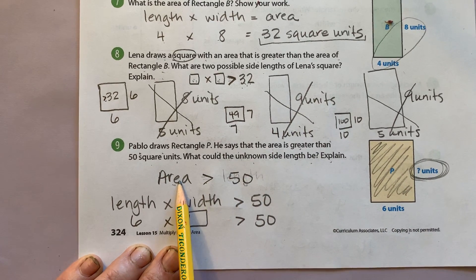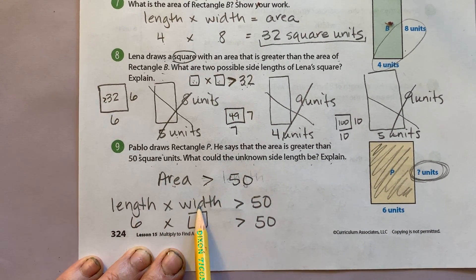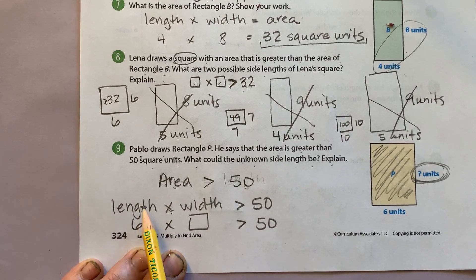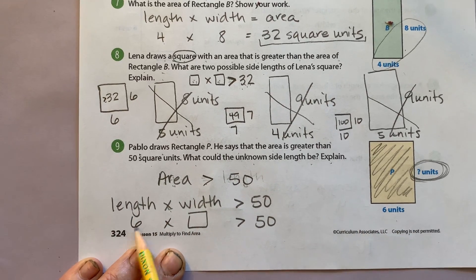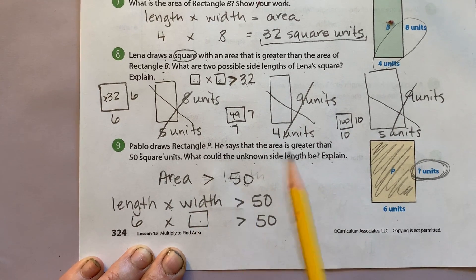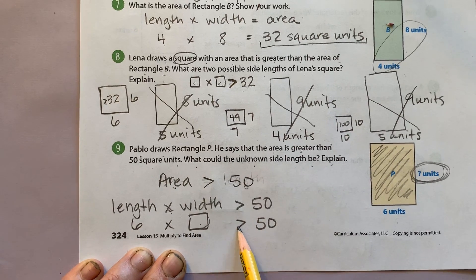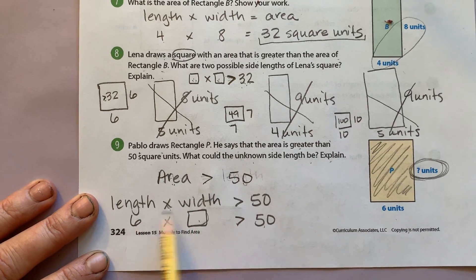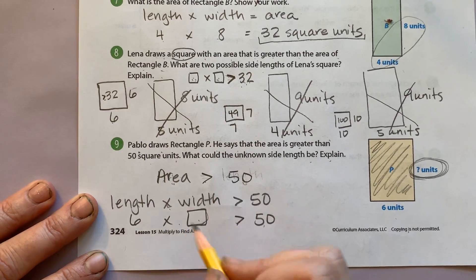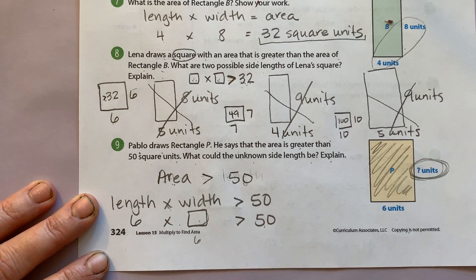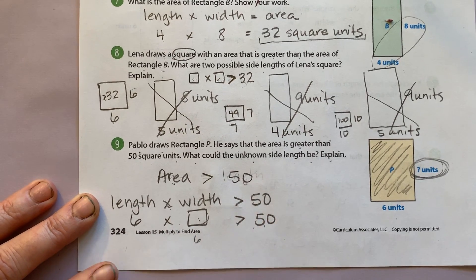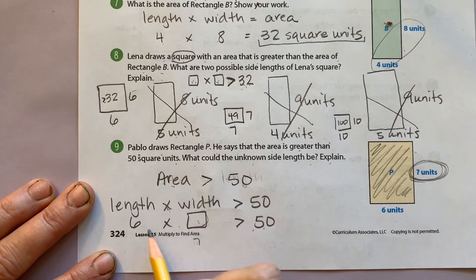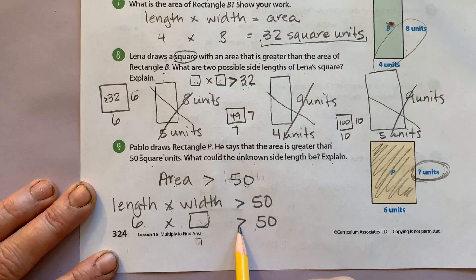I also know that area is the same thing as length times width. So I substituted that in. Instead of finding area, I'm writing length times width. My length is six times my width. I have to find a number here so that it's greater than 50. So I already remember from up here, six times six is 36. If I put six in here, does that work? Six times six is 36. No, that doesn't work. What if I put seven? Six times seven is 42. Is 42 greater than 50? Nope.